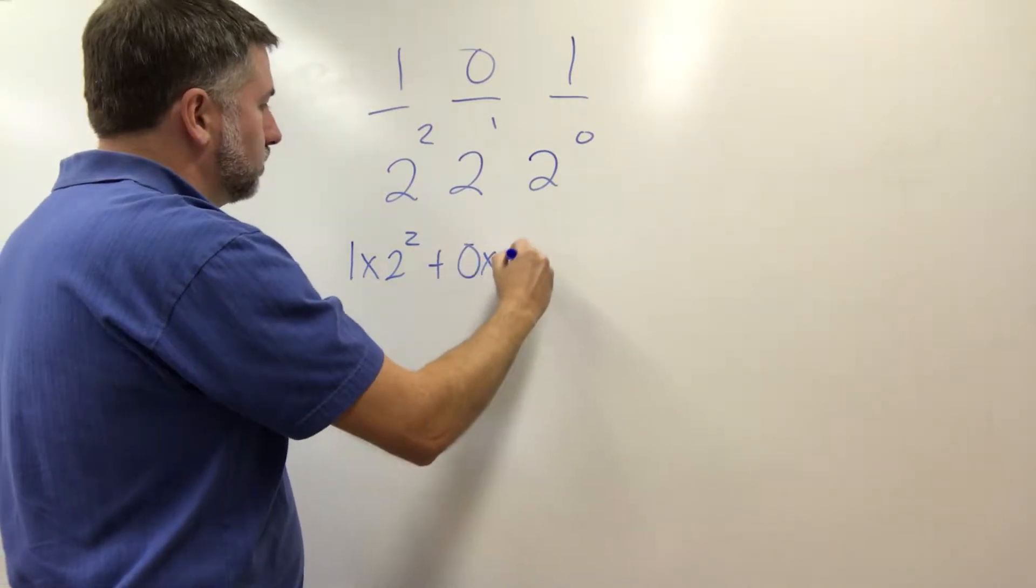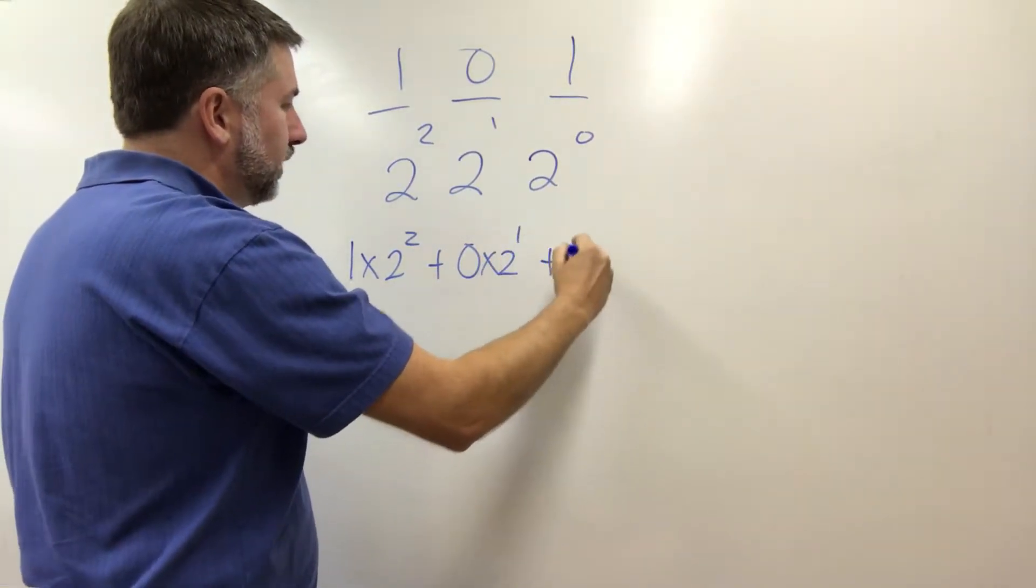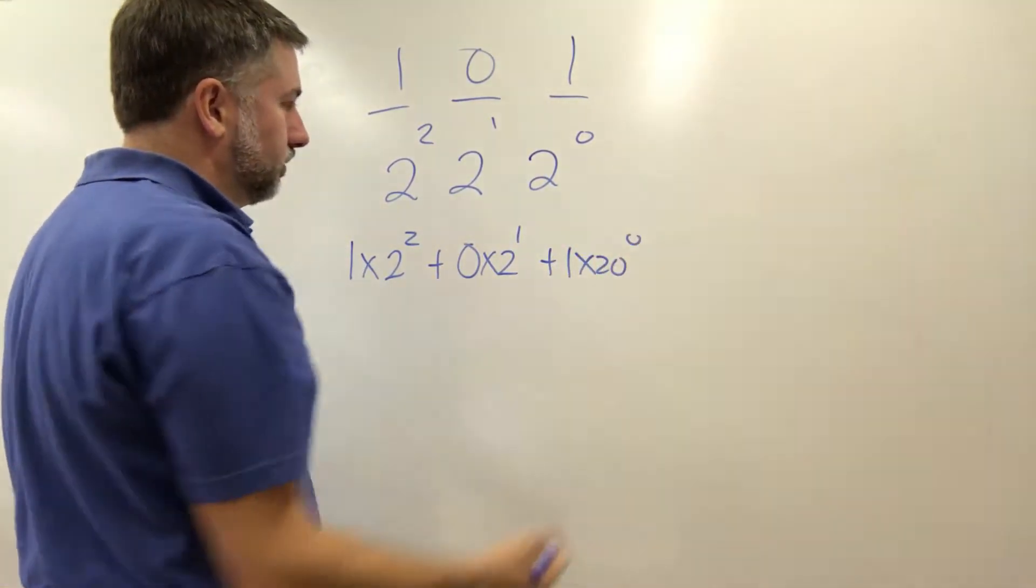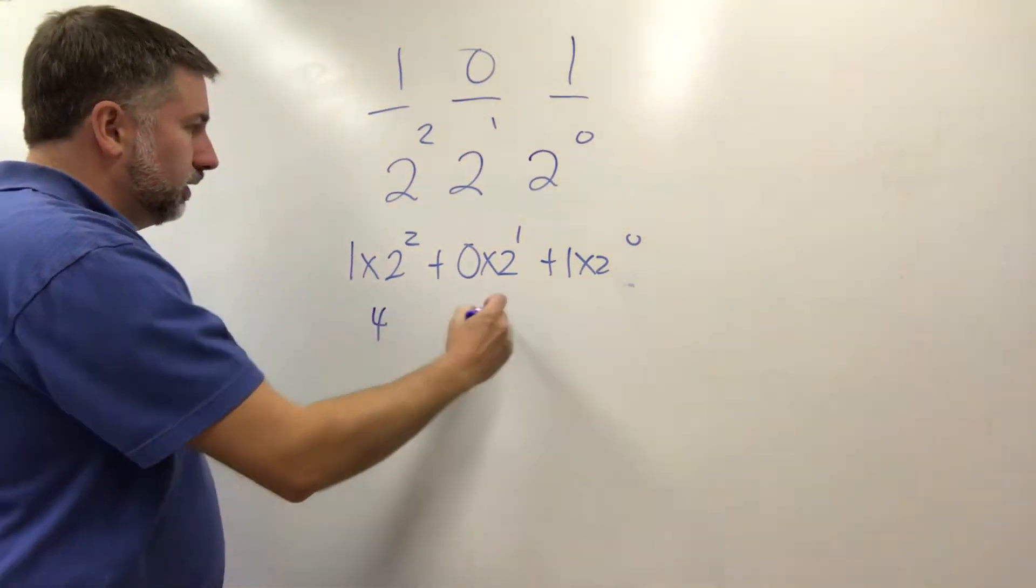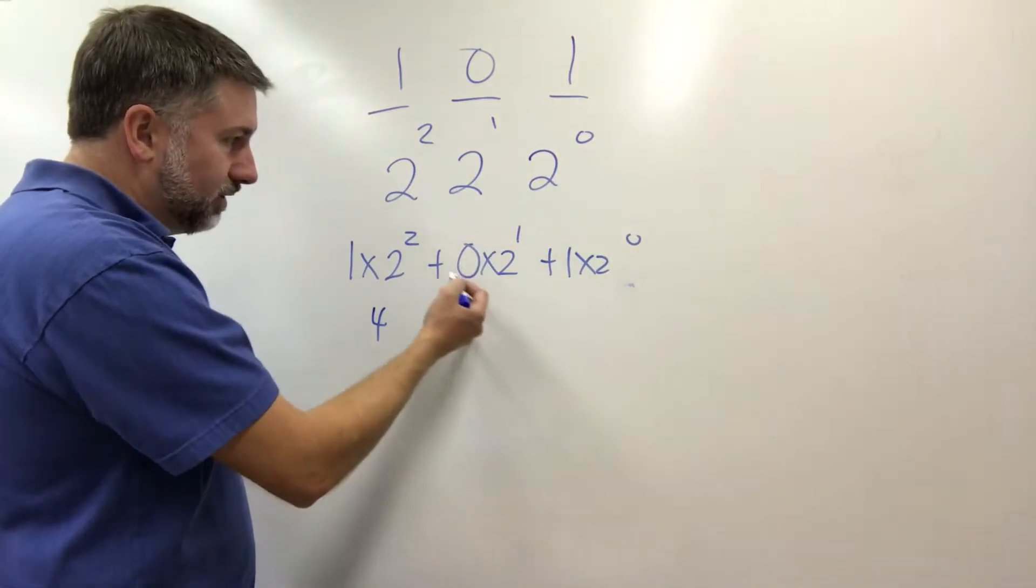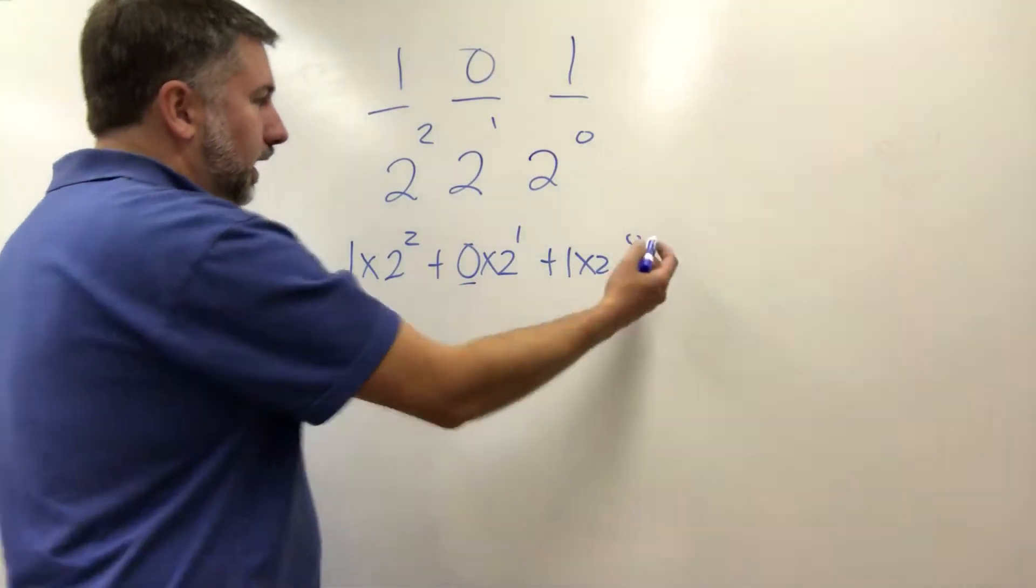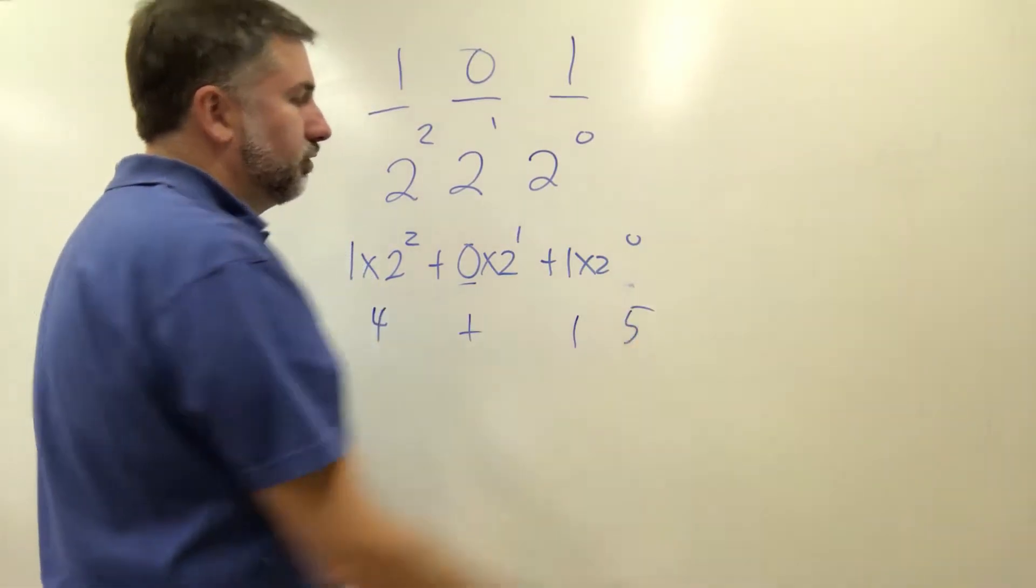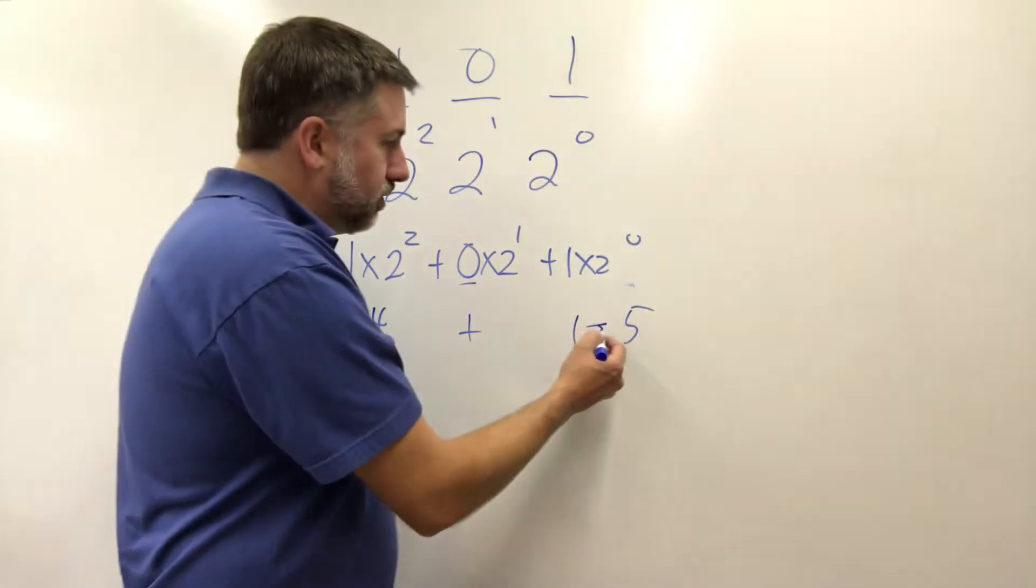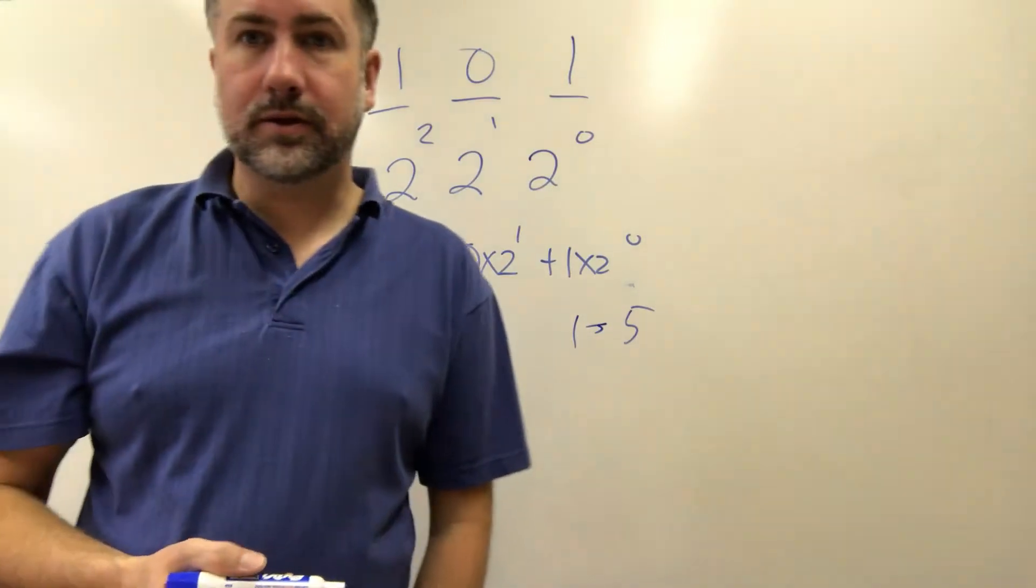So one times two to the power of two plus zero times two to the power of one plus one times two to the power of zero. Two to the power of two is four, two to the power of one is two but there isn't any of it because we're multiplying by zero. Two to the power of zero is one, so it's four plus one is five. This is the way we do math in computers.